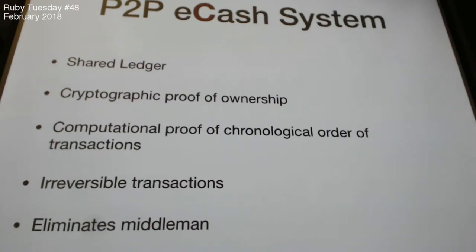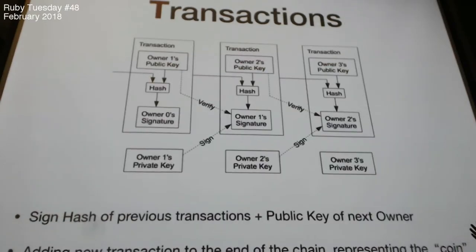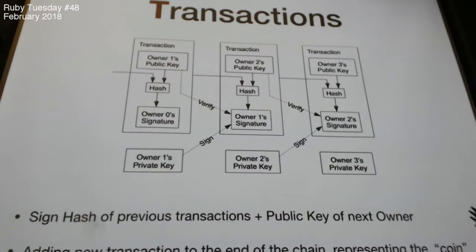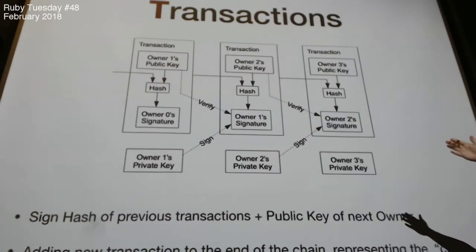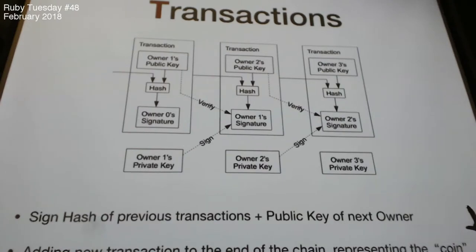This is from the Bitcoin white paper. It describes the digital signature part, which means you are the only person that can spend money from your wallet, and all it does is use private and public key encryption. Imagine you are sending — the transaction in the middle signifies, say for example, a person that is trying to send a transaction to owner two.